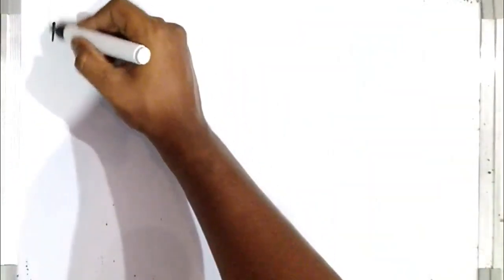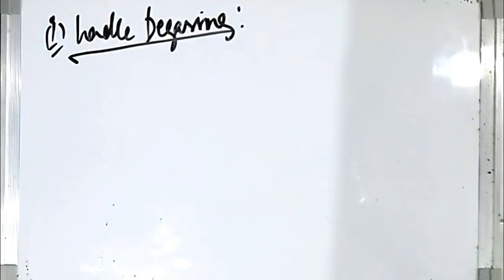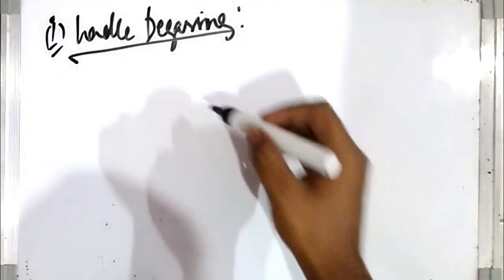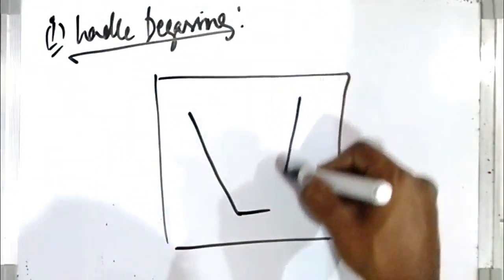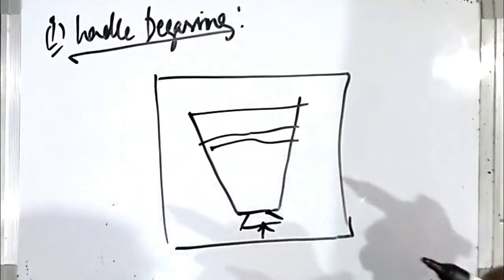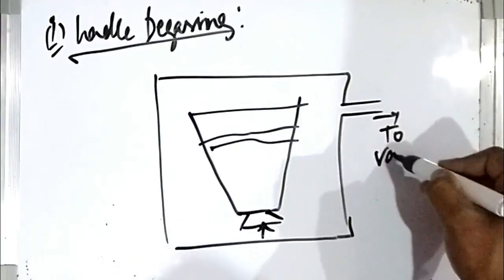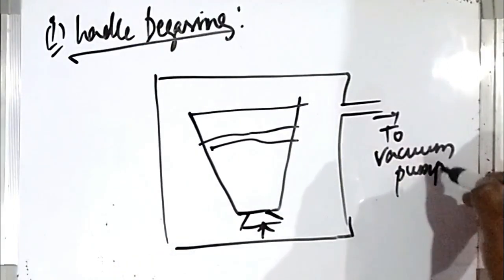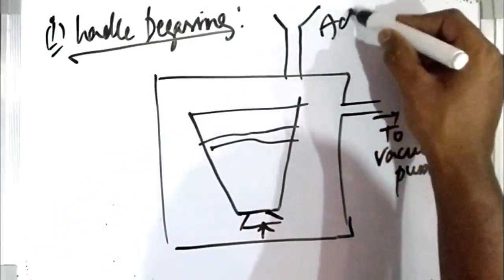The first type is ladle degassing. In this method, a ladle containing molten steel is placed inside a chamber which is evacuated. The ladle containing steel is kept in a vacuum chamber and allowed to degas. From the bottom, argon is purged through the steel. A vacuum pump removes any gases that form to maintain the vacuum.